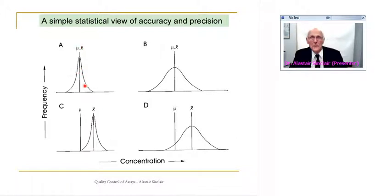The true value and the mean coincide again, but the repeat analyses have a much greater spread of values. So while they're correct on average, the lab's a little bit sloppy and produces a much greater dispersion of values.